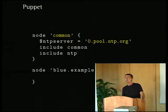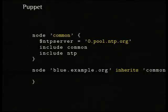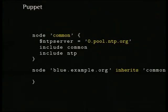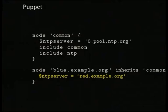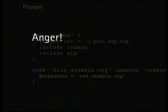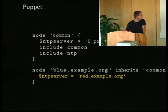In Puppet, you can factor out some of these behaviors into a common node — something like an include, using inheritance. Programmers will understand what is meant by 'inherits.' In the 'common nodes' definition, all nodes that inherit from it get a default NTP server and the NTP class included. By mere inheritance, blue.example.org also includes an NTP client configured to use that server. But blue.example.org is in Zurich and should use a Swiss-specific server — so I try to override the NTP server for blue. Unfortunately, that does not work in Puppet.